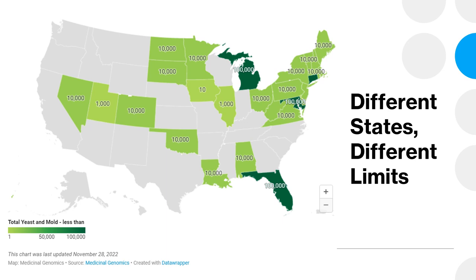Taking a closer look at this chart, you can see that there are 27 states that currently require total yeast and mold testing in cannabis and have regulatory limits for this analysis. Some states are going to have extremely low limits, while other states like Florida have higher limits. These limits are decided at a state level because cannabis is still federally illegal and is a Schedule I substance, which is why we're seeing so many variations.